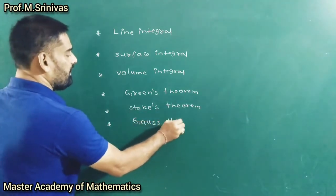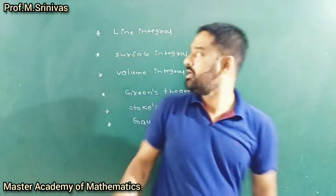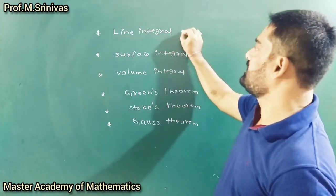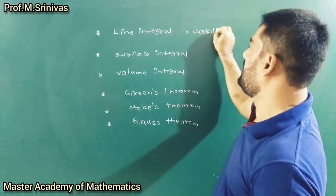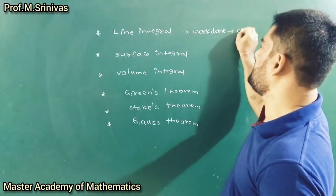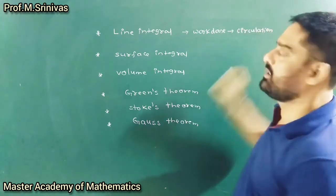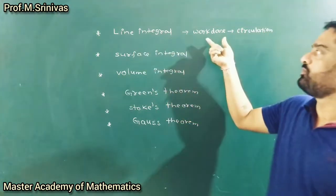We have three theorems and three integrals. The first one, line integral, is a single integral. It is also called work done or circulation. They are going to ask you to find the line integral, or to find the work done, or to find the circulation.